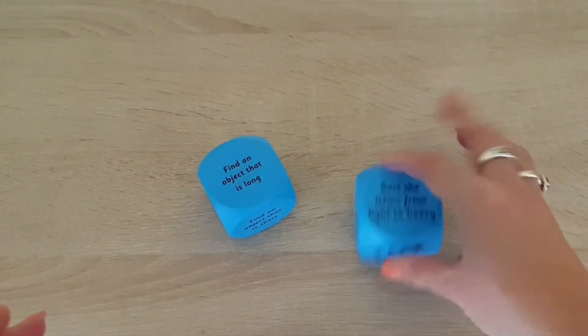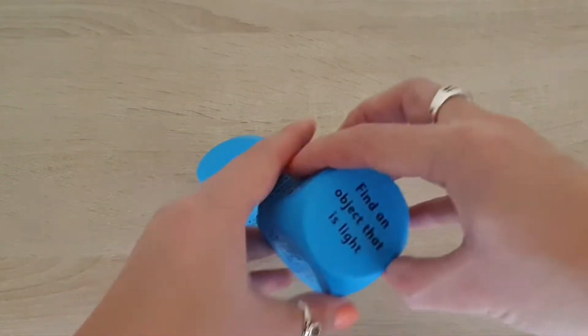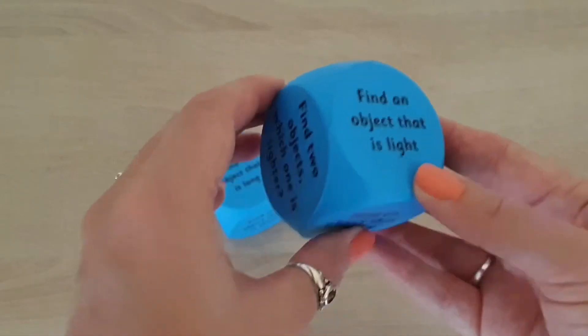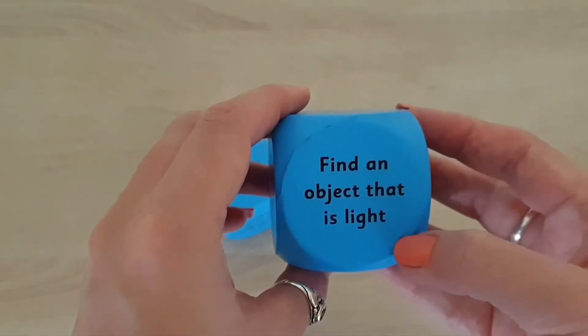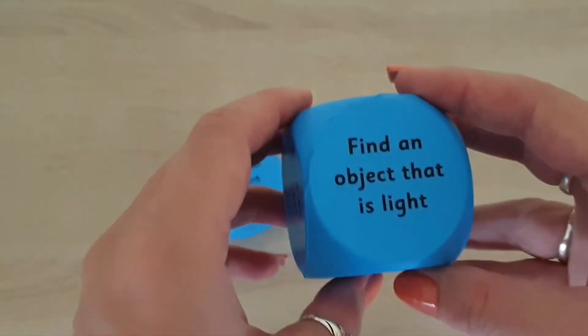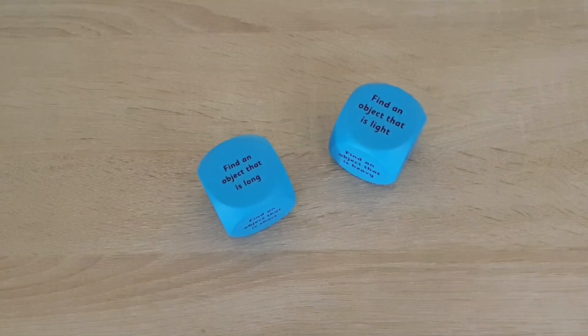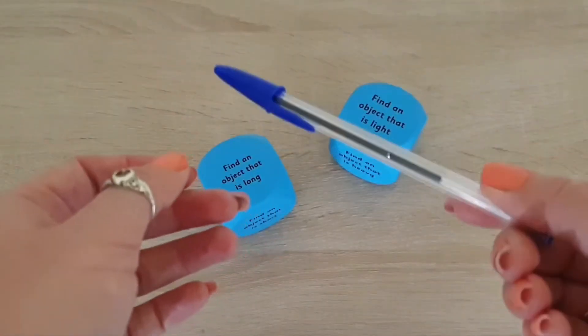So let's have a little go at using the weight cube. It says find an object that is light. Obviously you'd be asking your child to be thinking about what the word light means, and then they would maybe go off for a little search around their house to find something that is light. So for me, I went off and found a pen.